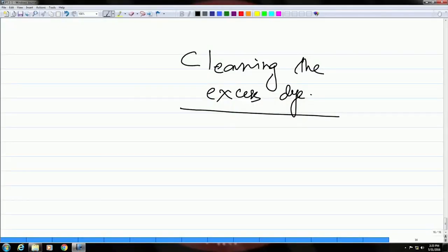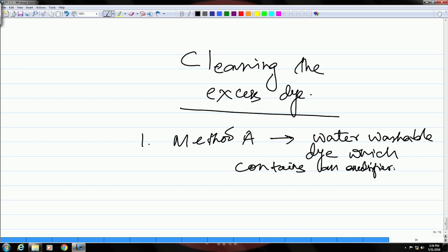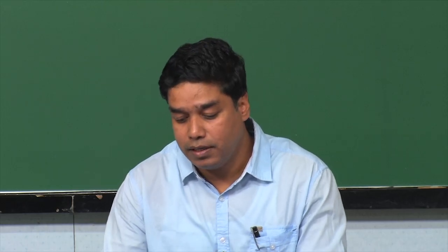We saw four methods of clearing the excess surface dye. Method A is the water washable dye, which contains an emulsifier. This already has the emulsifier built in, so you do not have to add the emulsifier externally like you do in the case of methods B and D. In this particular method, since the dye contains the emulsifier, you can simply use water and wash it off.